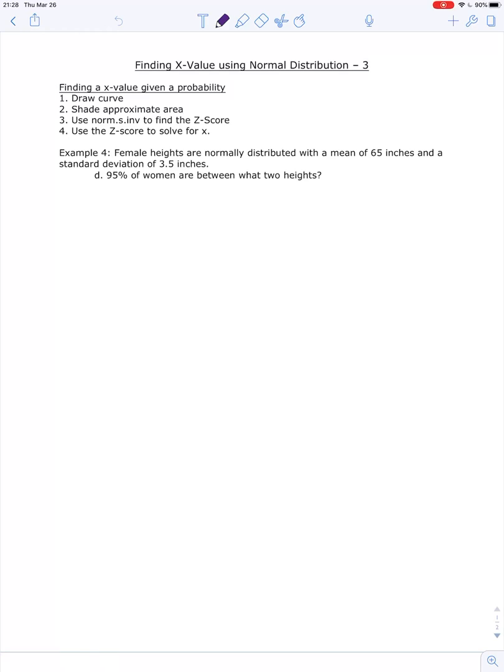All right, here we go. Our last example of how to find an x value if we've been given a probability. So we're working with the same information we have been. We have female heights that are normally distributed, they have a mean of 65 inches, and a standard deviation of 3.5 inches.